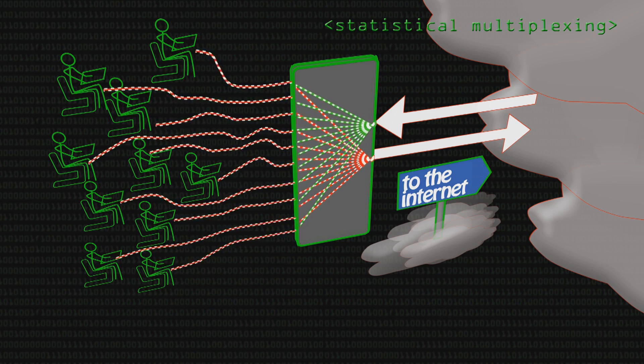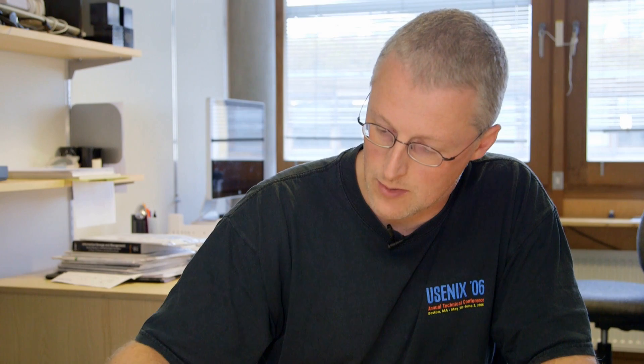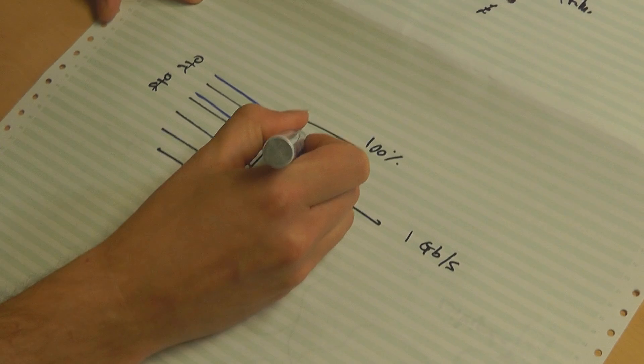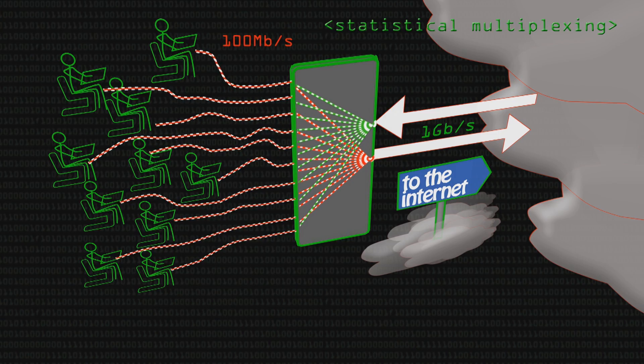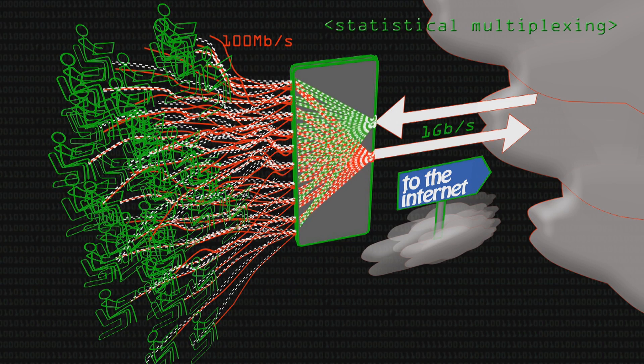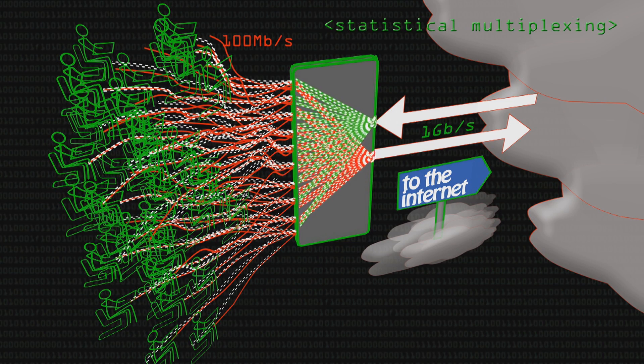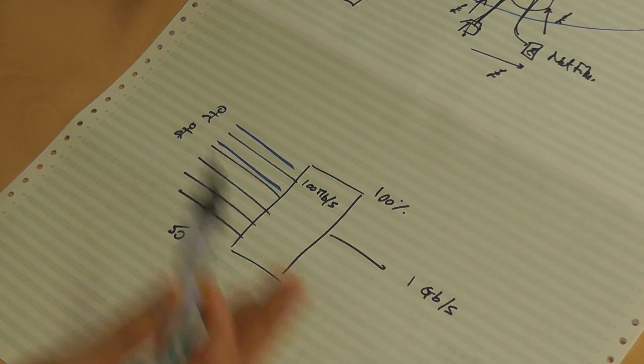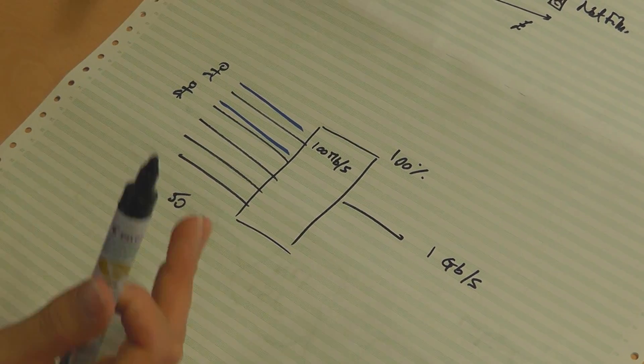Let's put some numbers on this. Say you've got 1 gigabit a second of capacity, and each subscriber has 100 megabits a second, and there are 50 subscribers. If everybody was going at full rate all the time, you'd have 5 gigabits coming in but only 1 gigabit going out — that won't fit. People are going to get loss, congestion, increased delays, because essentially all the packets are going to end up queuing up.